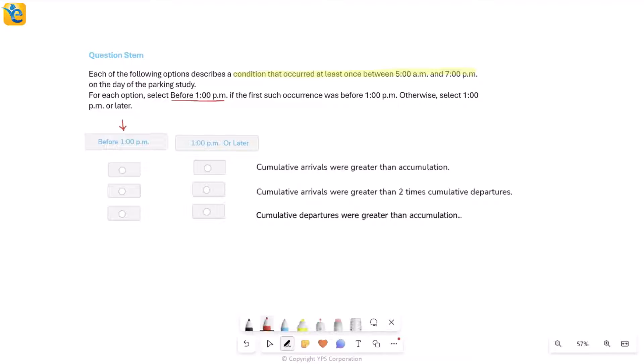the first such occurrence was before 1 pm. So we already know every occurrence here, all of these choices, they did occur at least once. So greater than or equal to 1 I'm sure of. Now we're saying that the first time that this occurred, if that happened before 1 pm, then you select this. Otherwise, you simply select 1 pm or later. Okay, so occurrence is guaranteed, I just have to see when that occurrence happened. So I will do these one by one.